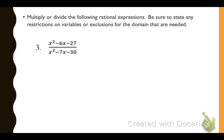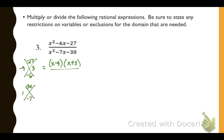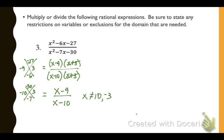Number 3: simplifying again, starting by factoring. Quadratic factoring in the numerator looks for numbers that multiply to give us negative 27 and combine to give us negative 6 — that's negative 9 and 3. In the denominator, we look for numbers that multiply to give us negative 30 and combine to give us negative 7, giving us negative 10 and 3. We divide out the common expressions and are left with x minus 9 over x minus 10. We exclude 10 and negative 3.